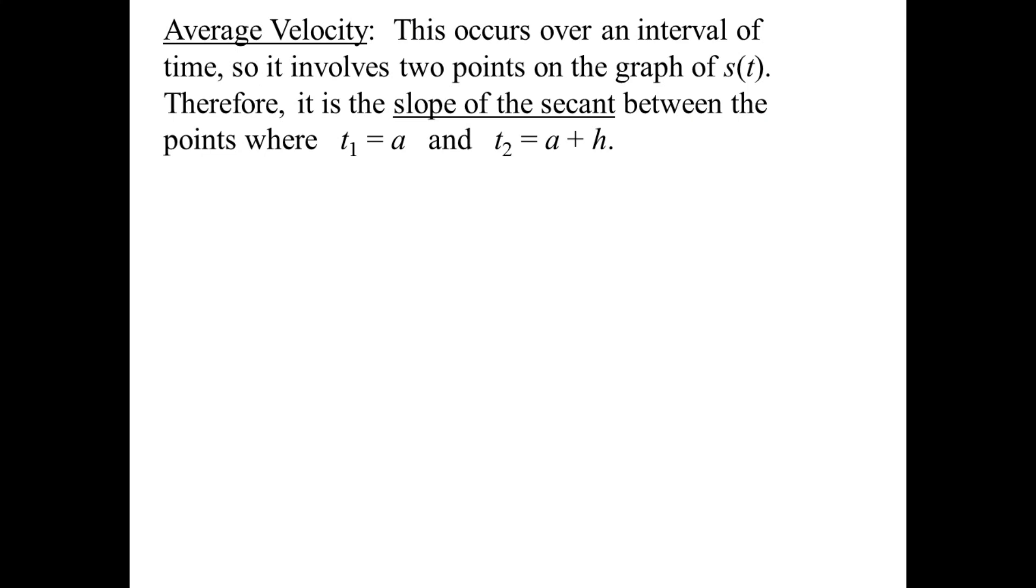Average velocity: This occurs over an interval of time, so it involves two points on the graph of s of t. Therefore, it is the slope of the secant between the two points where t1 equals a and t2 equals a plus h.